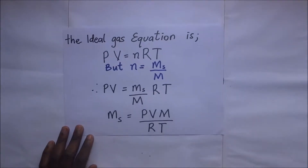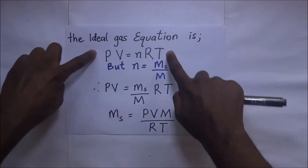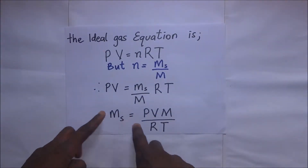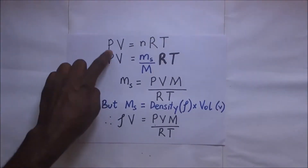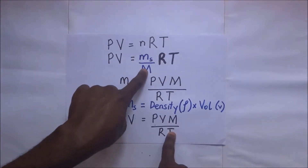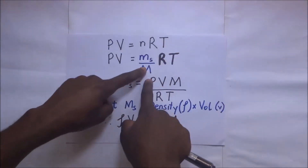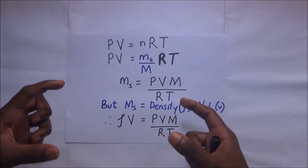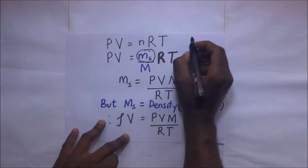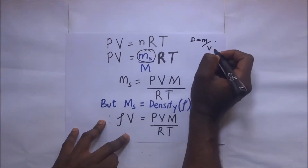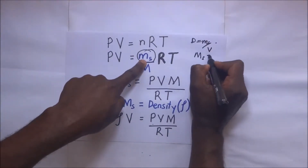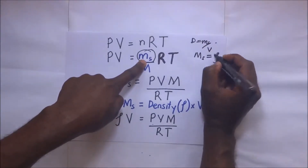If we want to find the density of an ideal gas, we still begin from PV = nRT, but manipulate it so that density becomes the subject. PV = (m_s / M) × R × T. We're looking for density, which is within this expression because m_s is the mass of the gas. We know that density ρ = mass / volume, so m_s = ρ × V.